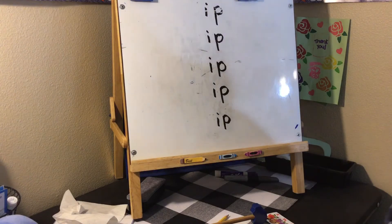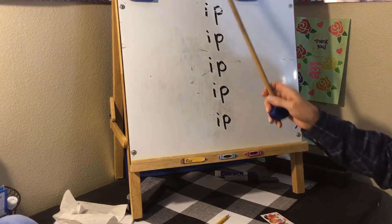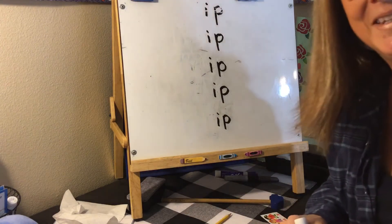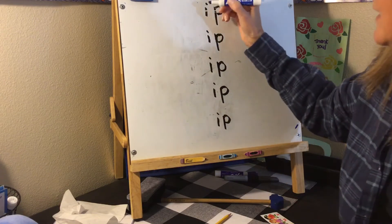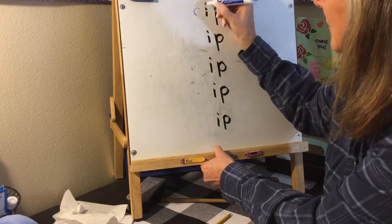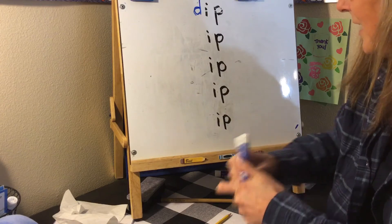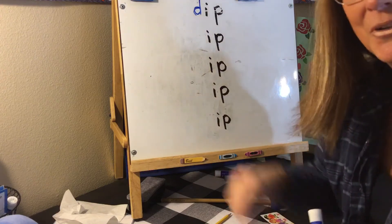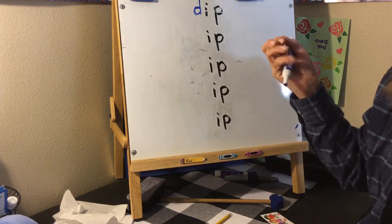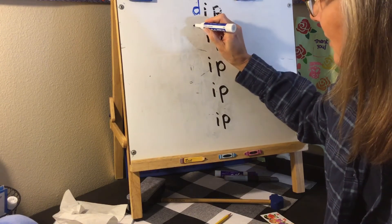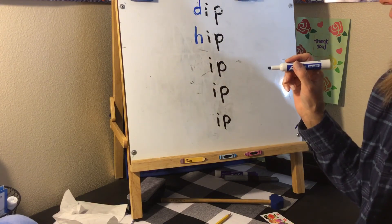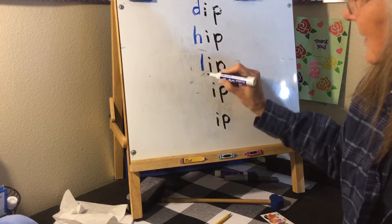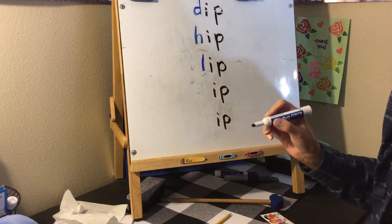I wanted to do one more thing today — just to review our short I. This is the -ip family. With the -ip family, I'm going to put some beginning sounds on to make some words. We say the beginning sound and then say it. So let's start with D — D, dip! I like to put my tortilla chips and dip them into dip. Then let's put an H — hip. And then an L — lip.